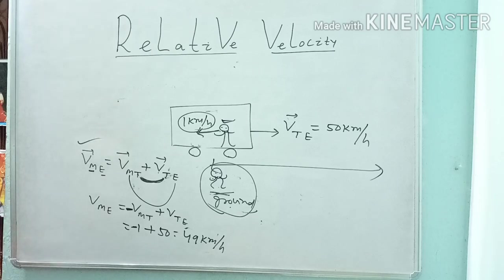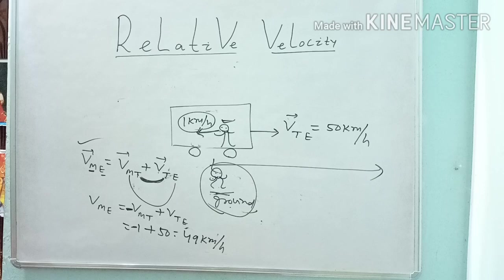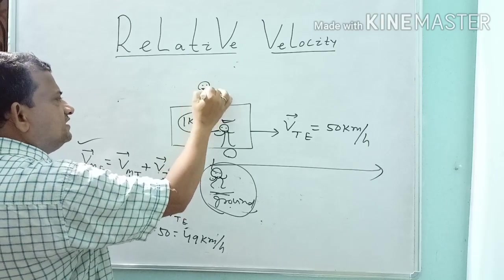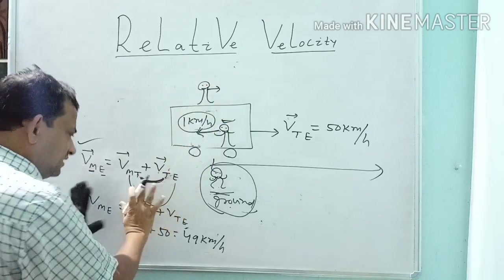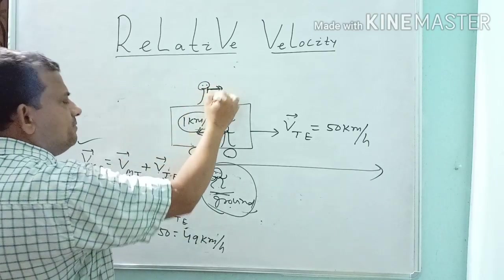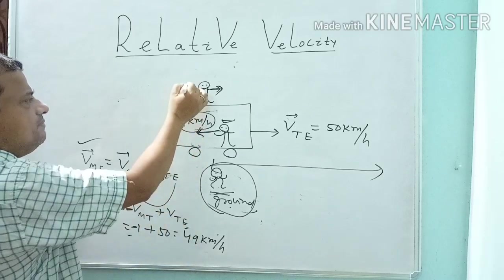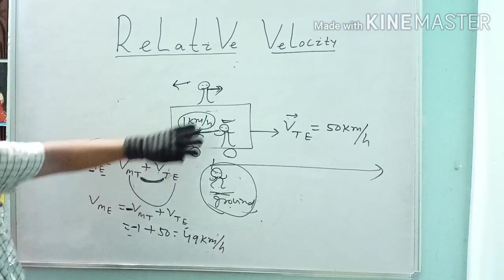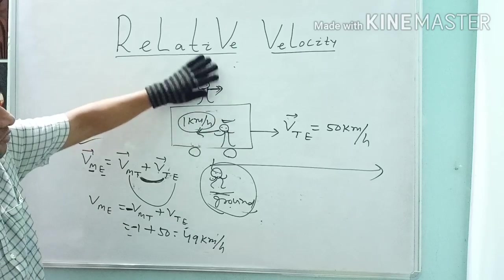An important thing is whether two are separate bodies or connected bodies. In this case the person is within the train. Same thing if the person is running above the train — same result. If it is in the same direction, the velocities add. If it is in the opposite direction, it will be subtracted.